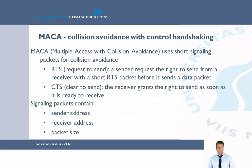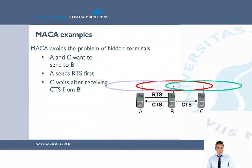This avoids the hidden terminal problem. For example, if both A and C want to send to B, A first sends a Request To Send, then B sends the CTS — the permission to send — and then C knows it should wait. So the problem we had with the hidden terminal is eliminated when using MACA.